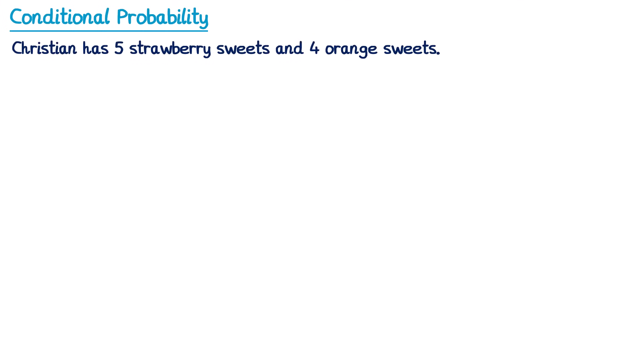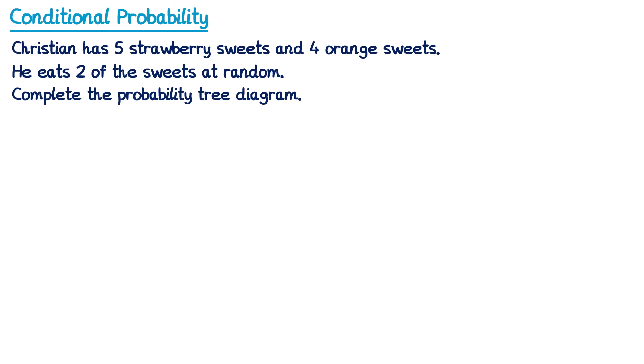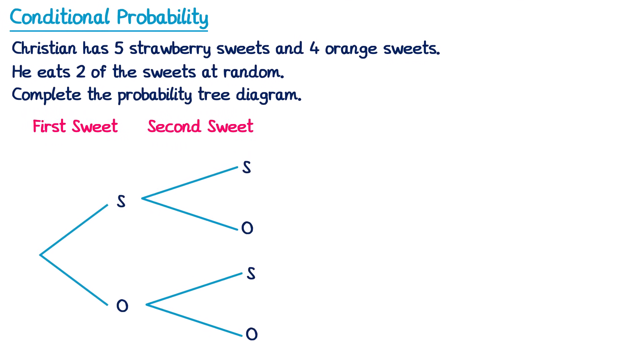Christian has five strawberry sweets and four orange sweets. He's going to eat two of the sweets at random and we need to complete the probability tree diagram. Since there are five strawberry sweets and four orange sweets there are nine sweets in total. If five of them are strawberry the probability of strawberry must be five over nine, and if four of them are orange then the probability of an orange sweet is four over nine.